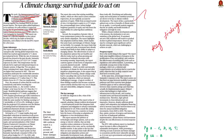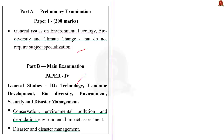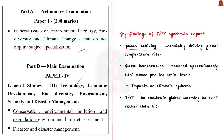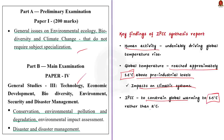We will try to understand the points provided in this article. The report confirms that human activity is undeniably driving global temperature rise. The global temperature has reached approximately 1.1 degree Celsius above pre-industrial levels. This 1.1 degree Celsius temperature rise has already led to rapid and widespread impacts on climatic systems across the world. These impacts strengthen considerable action in the IPCC report, which advocates constraining global warming to 1.5 degree Celsius rather than 2 degree Celsius.